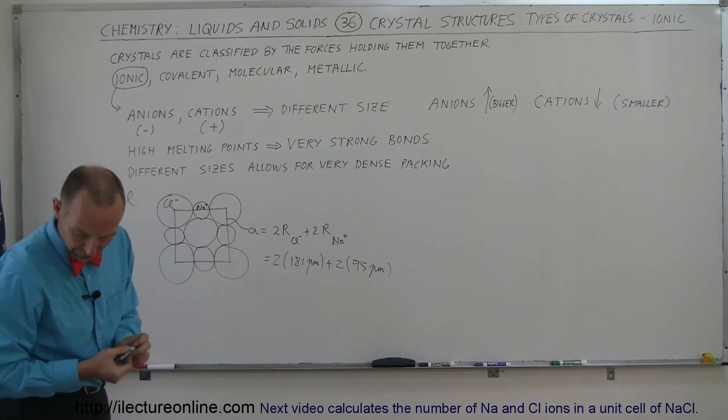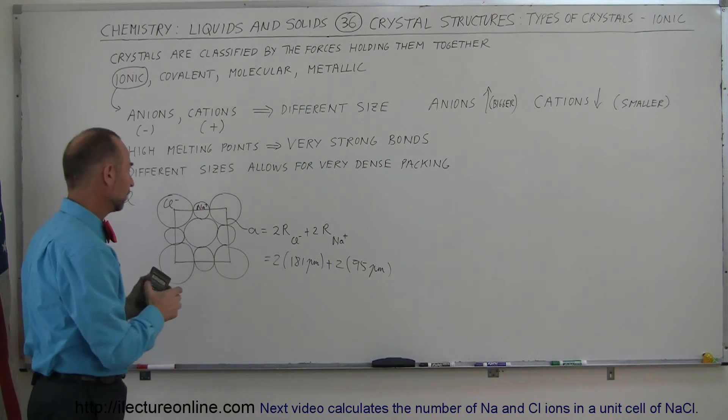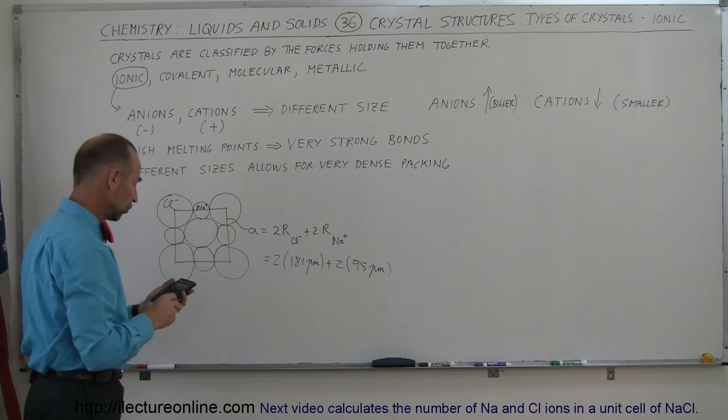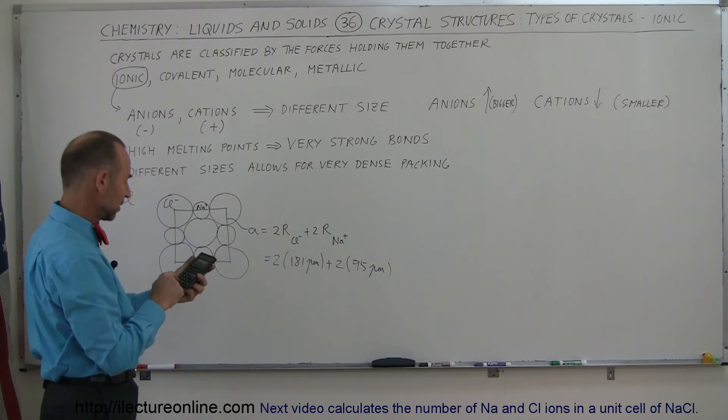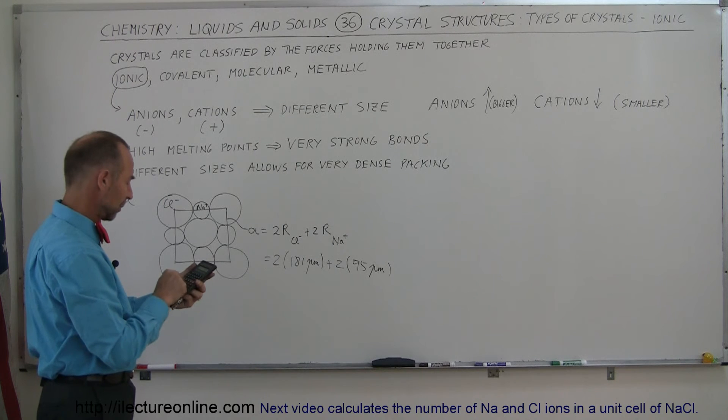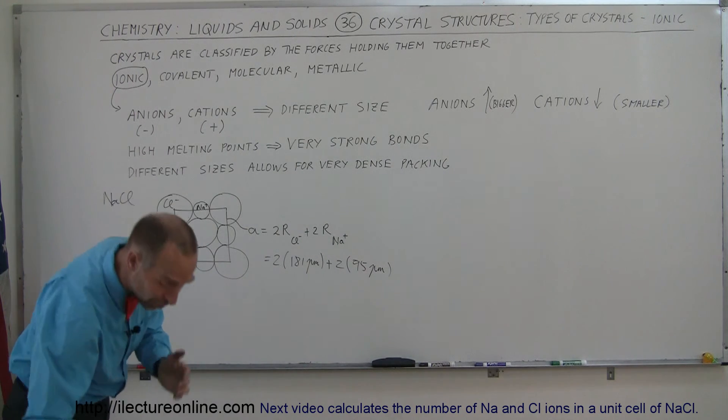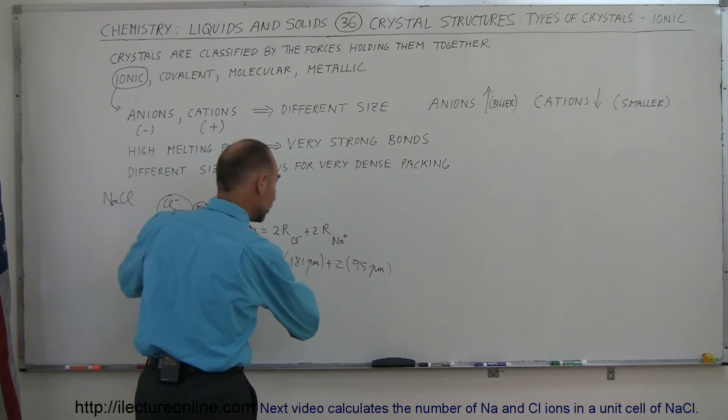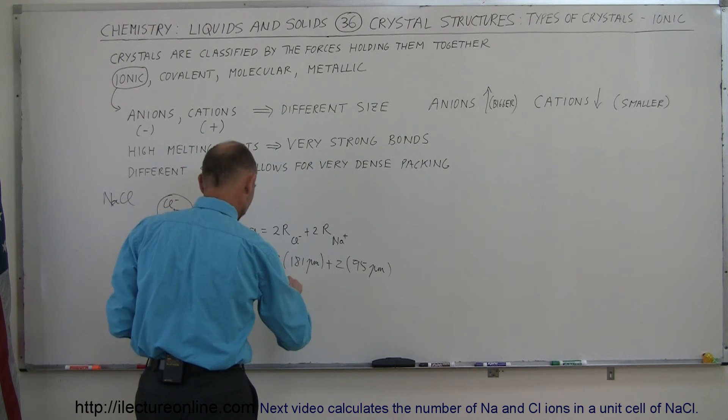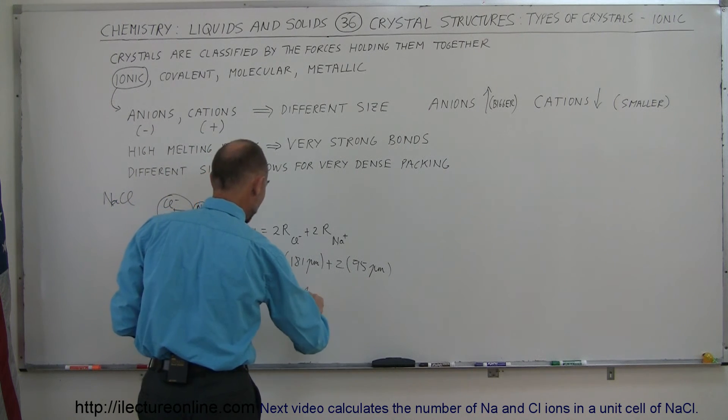So let's see here, where's my calculator? What would be the full size of one of those unit cells for sodium chloride? We have 181 times 2 plus 95 times 2 equals 552 picometers.